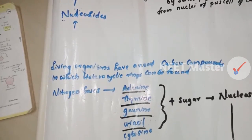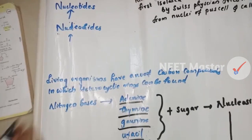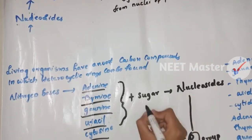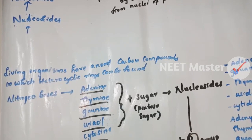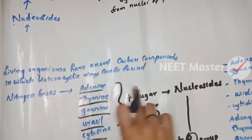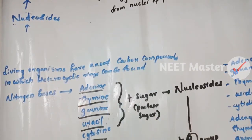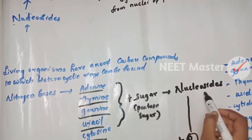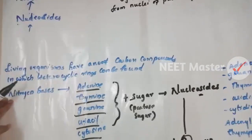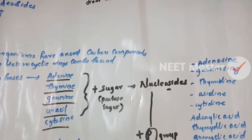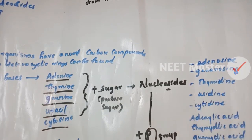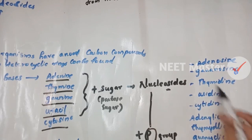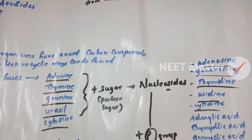The nitrogen bases are adenine, thymine, guanine, uracil, and cytosine. Nitrogen bases plus pentose sugar is called a nucleoside. The nucleoside names are: Adenosine, Guanosine, Thymidine, Uridine, and Cytidine.